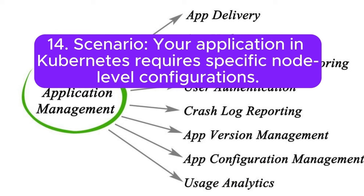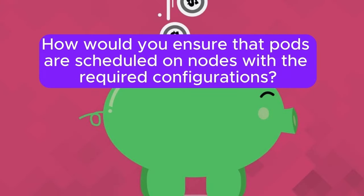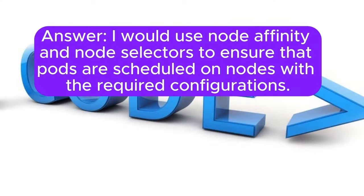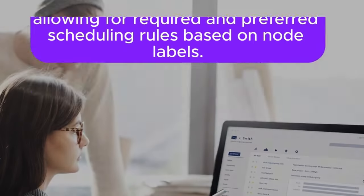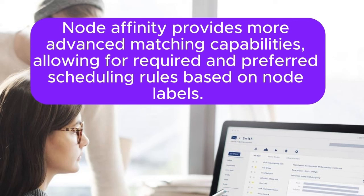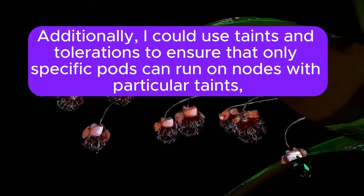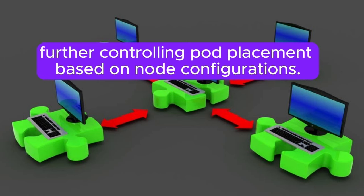Scenario 14: Your application in Kubernetes requires specific node-level configurations. How would you ensure that pods are scheduled on nodes with the required configurations? Answer: I would use node affinity and node selectors to ensure pods are scheduled on nodes with the required configurations. Node selectors are simple key-value pairs attached to nodes and matched by pods. Node affinity provides more advanced matching capabilities, allowing for required and preferred scheduling rules based on node labels. Additionally, I could use taints and tolerations to ensure that only specific pods can run on nodes with particular taints, further controlling pod placement.